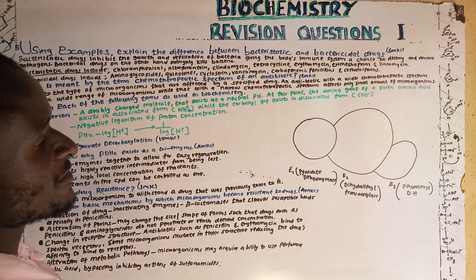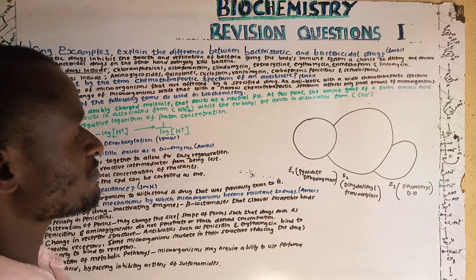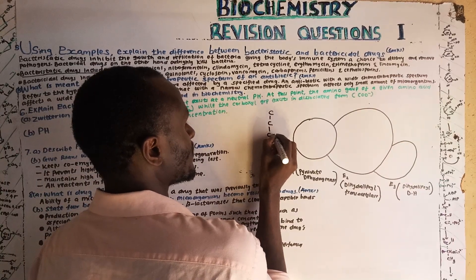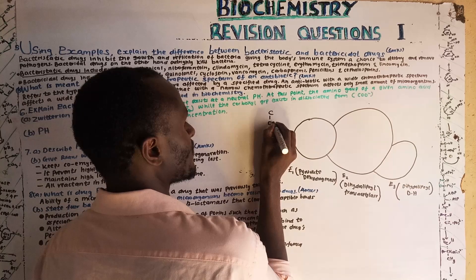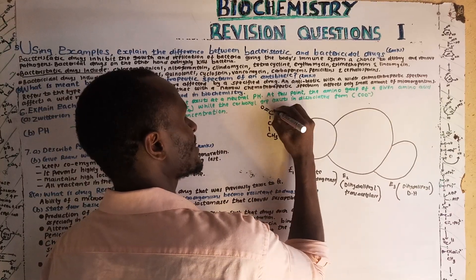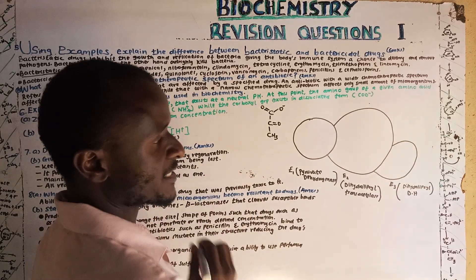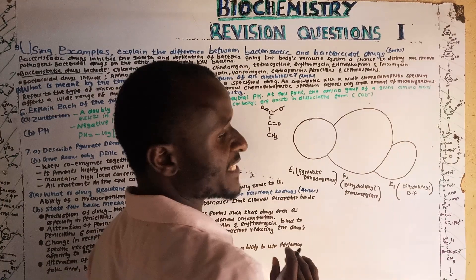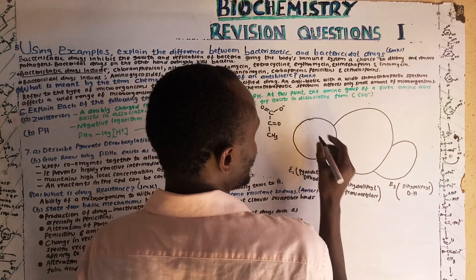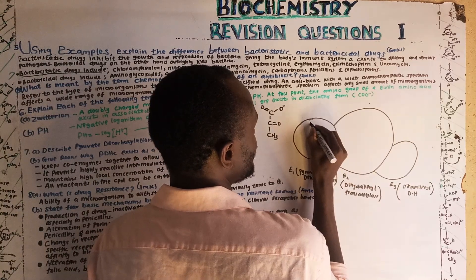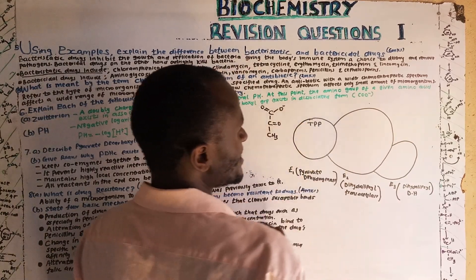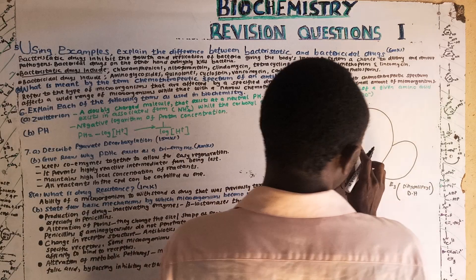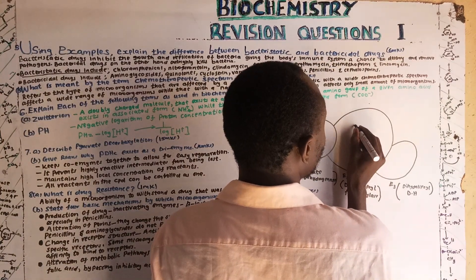The role of pyruvate dehydrogenase complex is to carry out decarboxylation of pyruvate. Pyruvate is a keto acid and a three-carbon component. This tri-enzyme has various coenzymes attached to it. Attached at E1 is TPP — thiamine pyrophosphate.